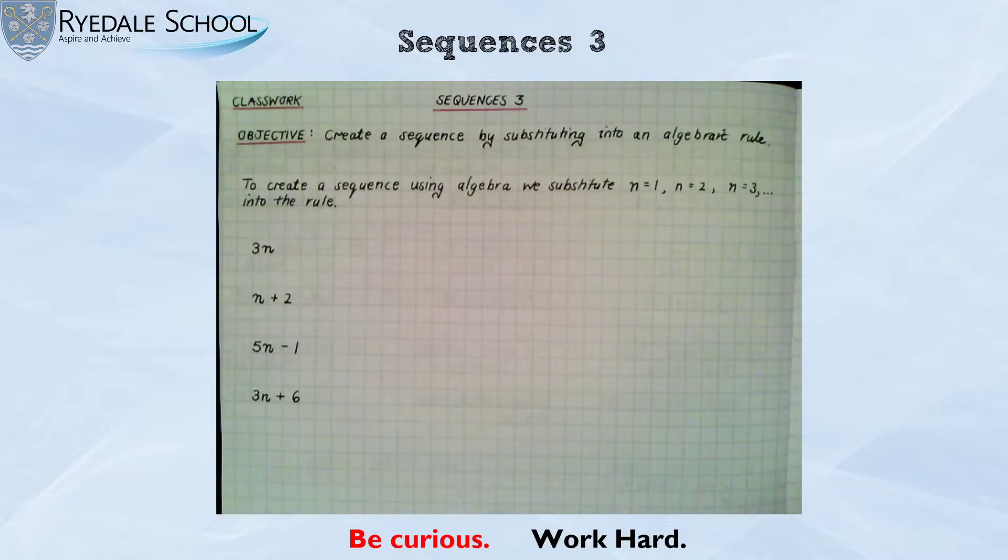But it's quite simple: if I want the first term in the sequence I substitute n is 1. If I want the second term in the sequence I substitute n is 2. If I wanted the tenth term I would substitute n is 10 and so on. So let's see how this works.